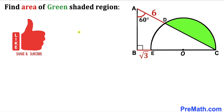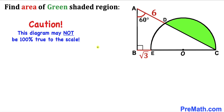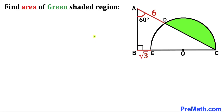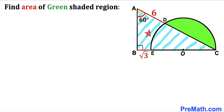Please don't forget to give a thumbs up and subscribe, and keep in mind that this figure may not be 100% true to scale. Let's go ahead and get started. Here's our very first step: let's focus on this right triangle ABC. We know this angle is 60 degrees.